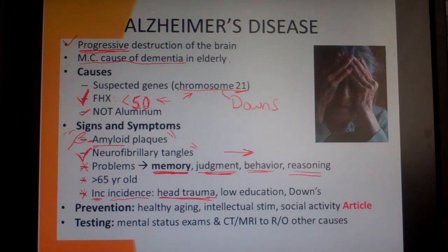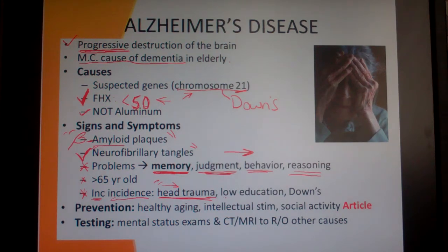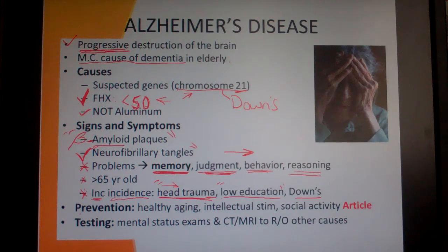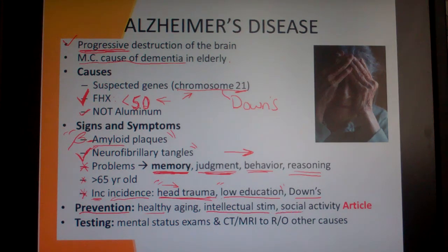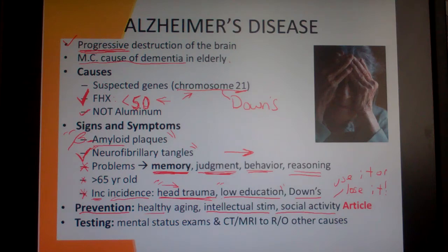Muhammad Ali actually had Parkinson's, not Alzheimer's disease — but head trauma is another risk factor for Alzheimer's disease. The best thing you can do to prevent Alzheimer's is not only living healthy as you age, but also intellectual stimulation and social activity. Alzheimer's is one of those 'use it or lose it' situations — you continue to decrease your risk of Alzheimer's the more you use your brain further into your life.